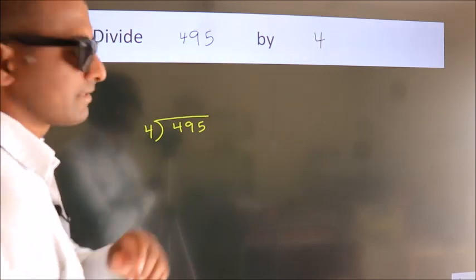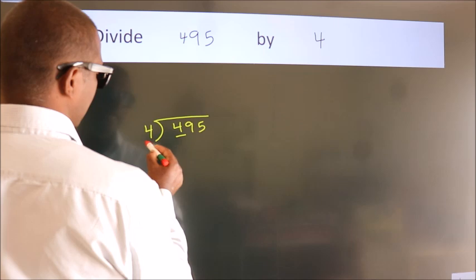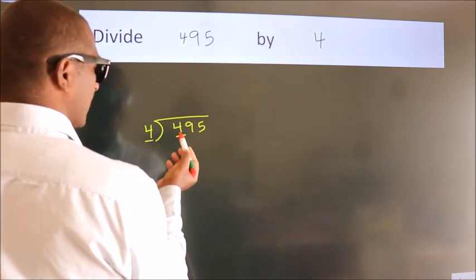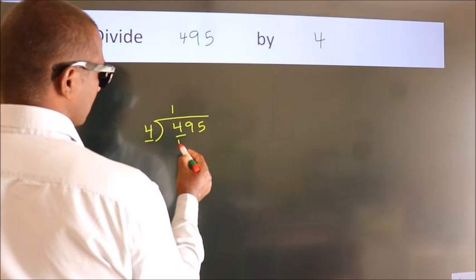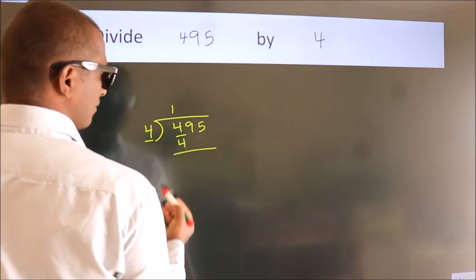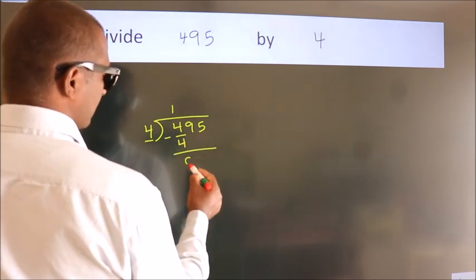Next, here we have 4, here 4. When do we get 4? In 4 table: 4 ones, 4. Now we should subtract. We get 0.